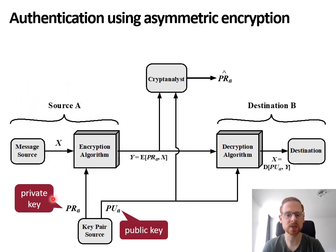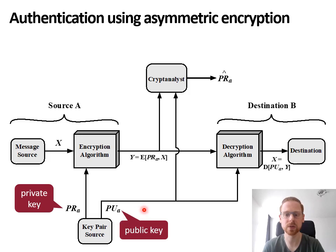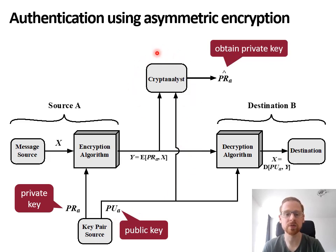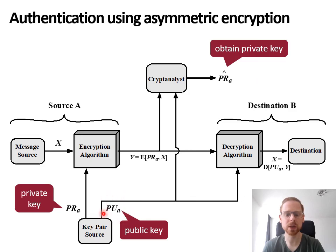As only the source A has access to the private key, only A can successfully encrypt a message. That means that anyone who gains access to the public key, which is inherently public, will be able to decrypt it and verify that this message was indeed created by A, as no one besides A has the ability to encrypt the message successfully. In this case, the cryptanalyst will not try to obtain the original message X — as it can be retrieved by anyone — but will try to obtain the private key. If an attacker obtains this private key, they will be able to encrypt messages pretending they originate from source A. We need to ensure that the public key is indeed the original public key of source A, which is related to the key distribution problem discussed in later lectures.